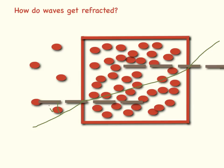And that against the normal here we have our angle of incidence and our angle of refraction. Our angle of refraction and our angle of incidence always measured against the normal.